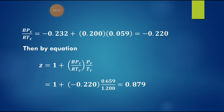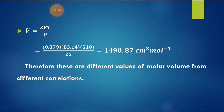Substituting: BPc/RTc = −0.232 + 0.200 × 0.059 = −0.220. Using Z = 1 + (BPc/RTc) × (Pr/Tr) gives Z = 1 + (−0.220) × (0.659/1.20) = 0.879. The molar volume is V = ZRT/P = 0.879 × 83.14 × 510 / 25 = 1490.87 cm³/mol.